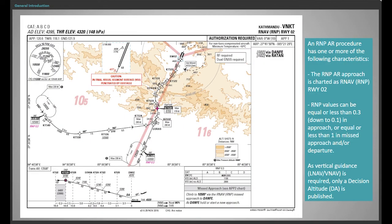An RNP AR approach is charted as RNAV RNP runway 2. RNP values can be equal to or less than 0.3, down to 0.1 in the approach, or less than 1 in missed approach and/or departure. As vertical guidance — LNAV or VNAV — is required, only a decision altitude is published.